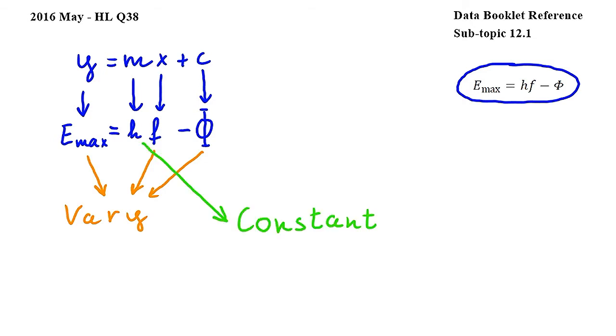Since h corresponds to m, which represents the slope or gradient of the line, we can conclude that the lines showing how maximum kinetic energy varies with frequency have a constant slope, which means that the answer to this question is C.